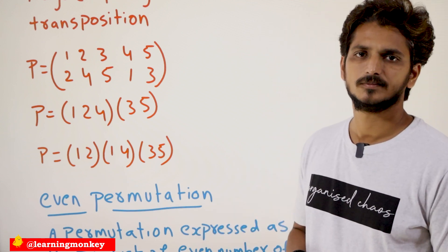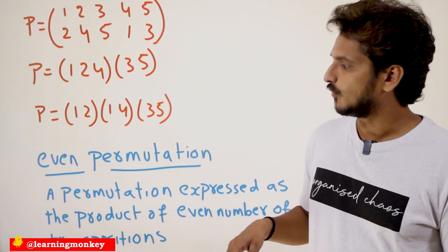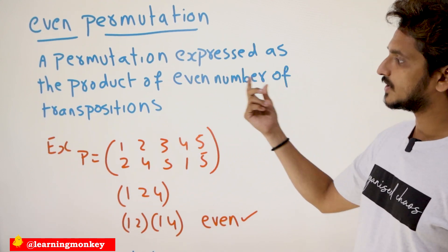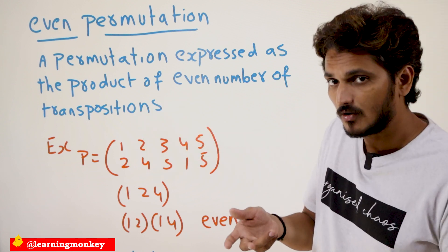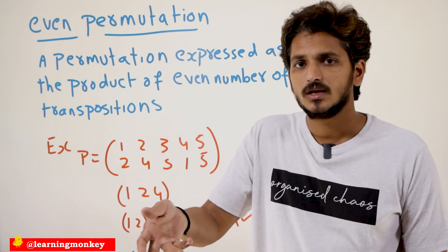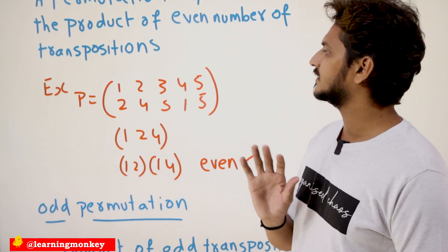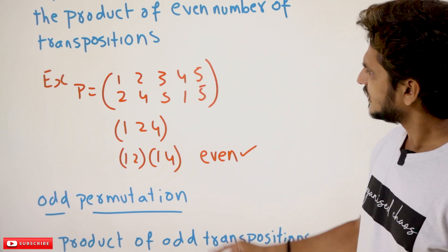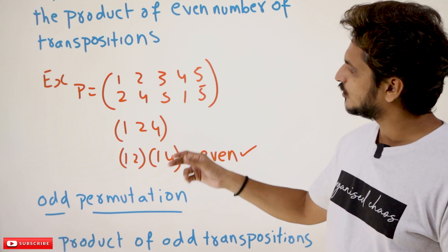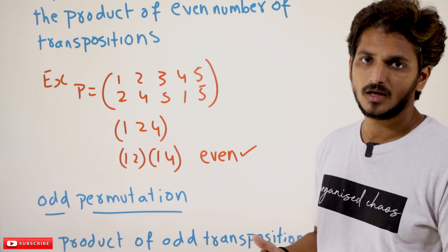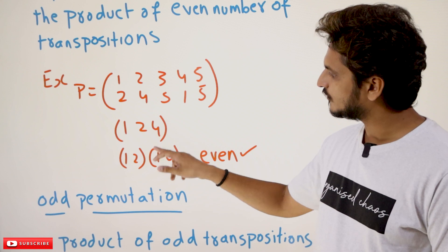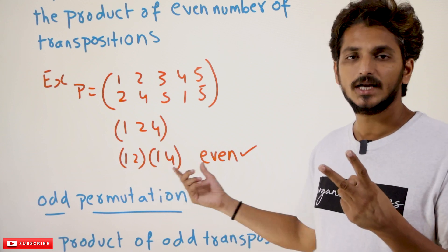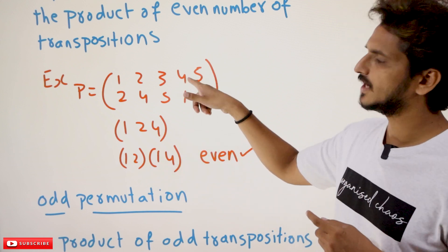Now, an even permutation is one that can be expressed as the product of an even number of transpositions. For example, P: 1→2, 2→4, 3→3, 4→1, 5→5. This can be shown as the cycle (1 2 4), which written as transpositions is (1 2)(1 4) — two transpositions. Since it is an even number of transpositions, we call this an even permutation.